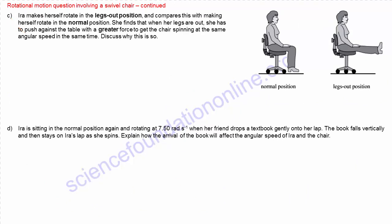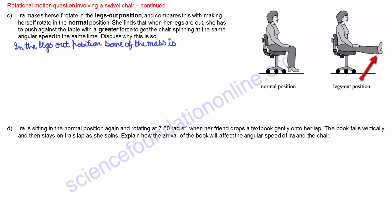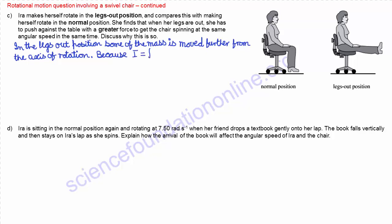Part C asks us to discuss why, when her legs are in the out position, Ira has to push with a greater force to get the chair spinning at the same angular speed in the same time. We need to recognize that some of her mass is moved further away from the axis of rotation when in the legs out position, and this increases the rotational inertia i. In the legs out position, some of the mass is moved further from the axis of rotation because the moment of inertia i equals the integral of r squared dm, so i is larger.